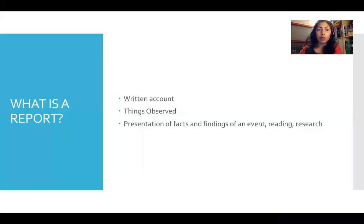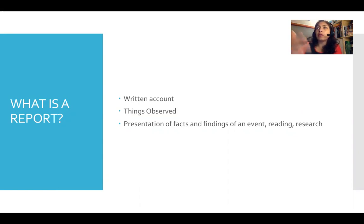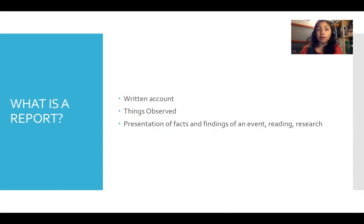So what is a report? Basically, a report is a written account. When you report something, you probably have seen something or know something, and you have to report it to your teacher, your senior, or even to a police officer. A report is a written account of things that you've observed, things that you've seen and heard. It's also a presentation of facts and findings of an event or a reading — for example, a book report or a research report.